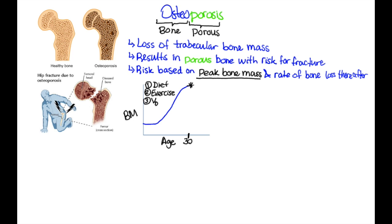Once you peak at 30, it's all downhill — you lose bone mass slowly over time, 1% per year, and it occurs in everyone.